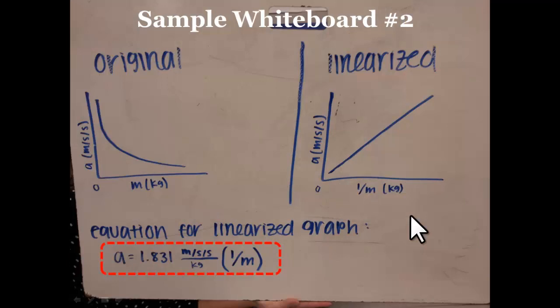The other half of our groups got a whiteboard that looked like this. They also found that the relationship between the acceleration and the mass was an inverse relationship. They linearized that by graphing acceleration versus one over mass, but they had a slope of about two. This group specifically got a slope of 1.831 meters per second per second divided by one over kilograms.